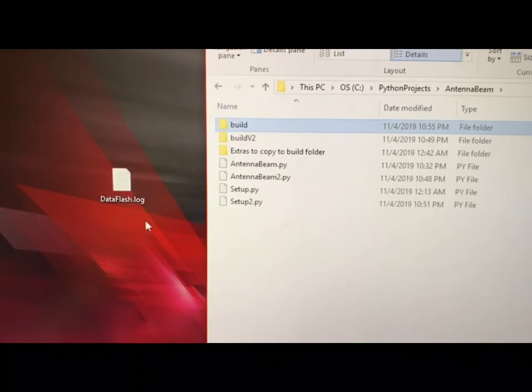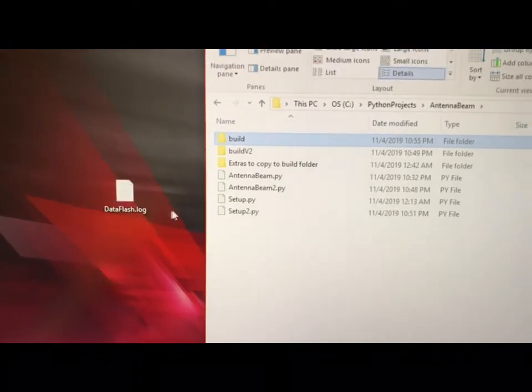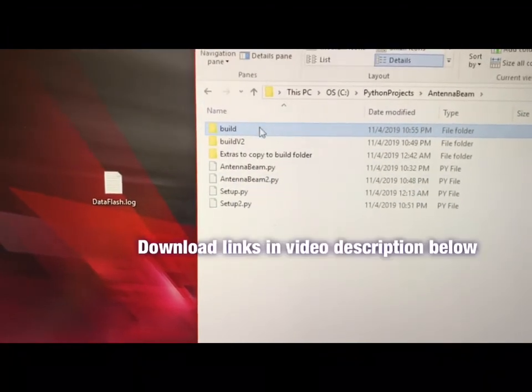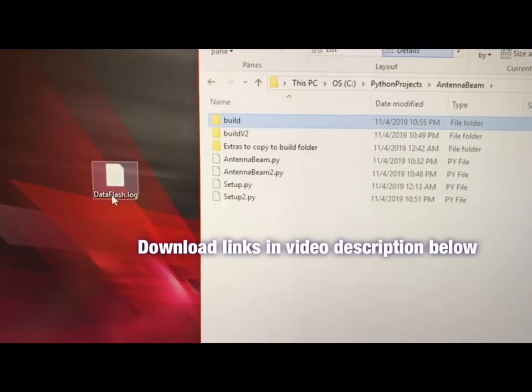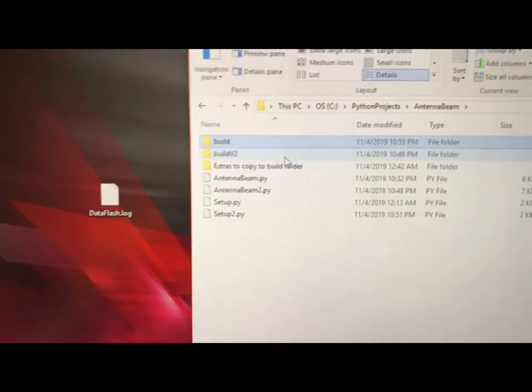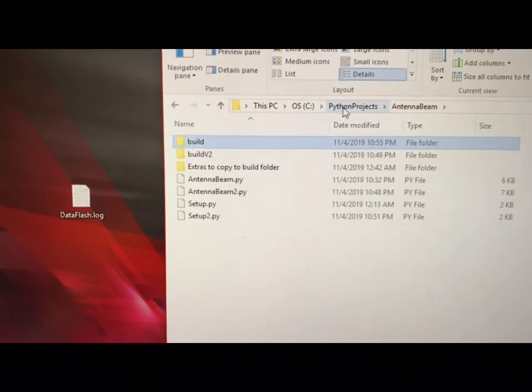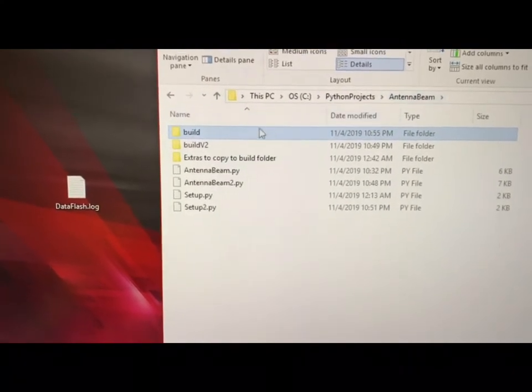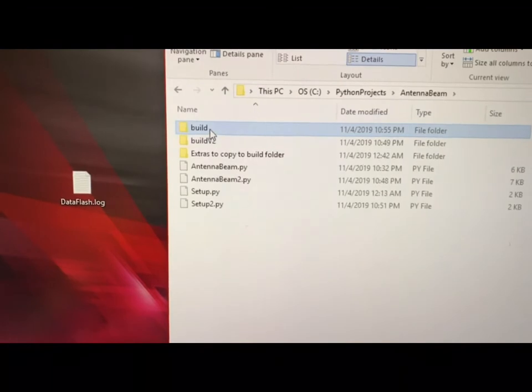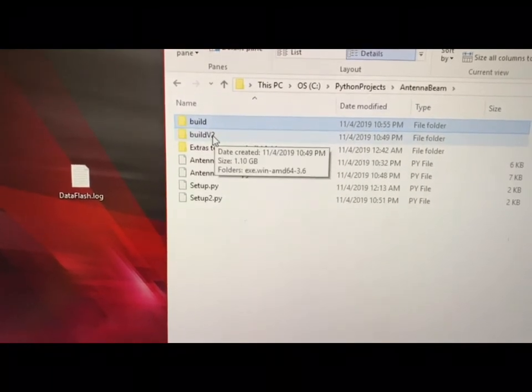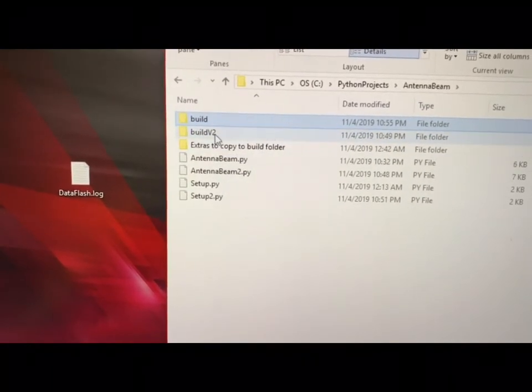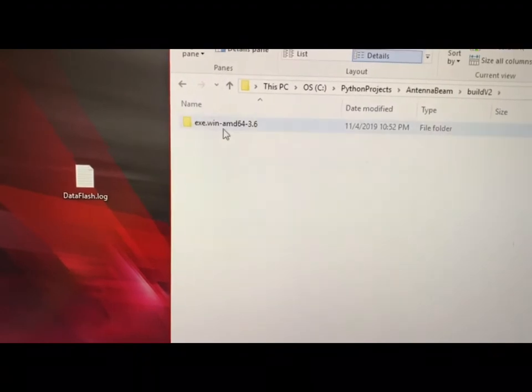The reason for calling the file dataflash.log is because I've written a program in Python that will look for this file name on the desktop. Here I am in the project folder - this is python project slash antenna beam. I have two builds, this is build 1 and this is the second build version 2. I'm going to open the second build, which is the latest one.